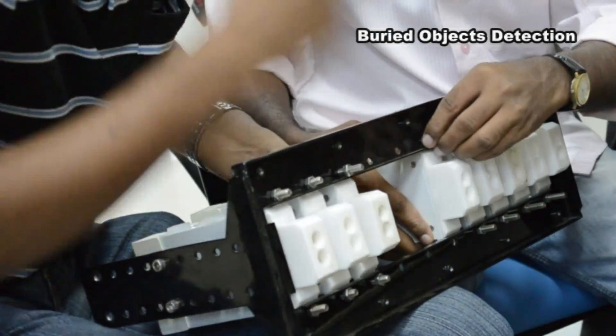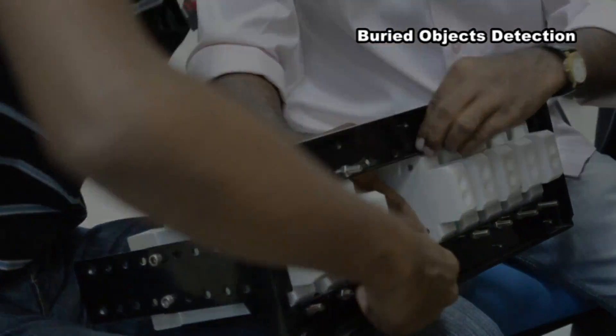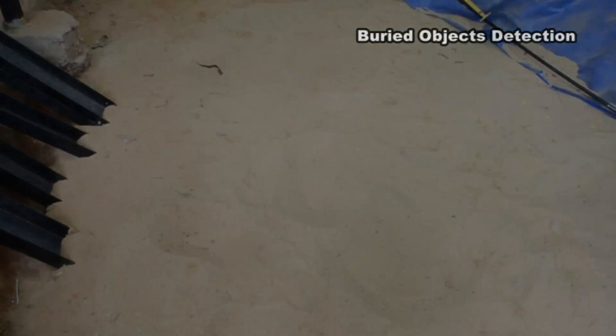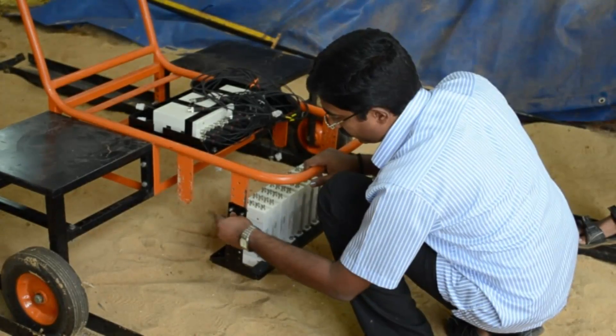The UDV array is fixed linearly for buried object detection. This is the sand pit, the test site. UDV array is fixed onto the trolley.